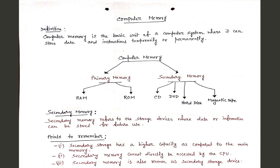A computer memory is the basic unit of a computer system where it can store data and instructions temporarily or permanently. Computer memory is divided into two types: primary memory and secondary memory. Primary memory is divided into two types — RAM (Random Access Memory) and ROM (Read-Only Memory). Secondary memory can be of many types: CD, DVD, hard disk, magnetic tape, and many more.